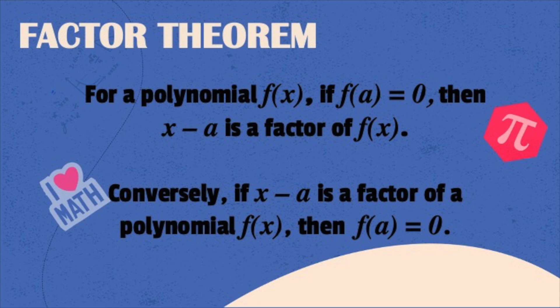But the only difference here is when f of a is equal to 0, meaning to say that is the factor theorem because there is no remainder. However, if you use f of a and the result is non-zero, then meaning to say the divisor that you are dividing into the dividend is not a factor of the given f of x.